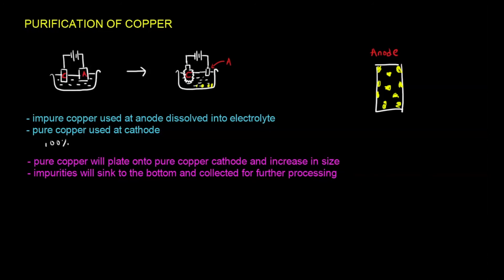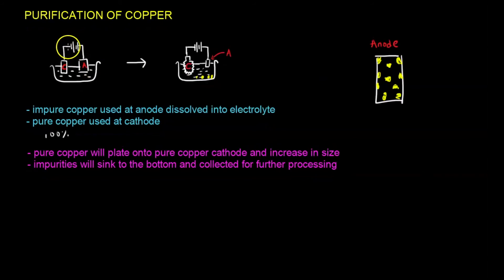And that will be all for purification of copper. Basically, the idea is that you have to use two copper electrodes. The cathode has to be very pure, whereas the anode can be impure. Because ultimately, only the pure part of the anode will be plated on the cathode. Whereas the impure part will just drop to the bottom and be further processed. The impurities can include gold and silver metal, for example. That will be all for electrolysis with reactive electrodes. In this case, copper.